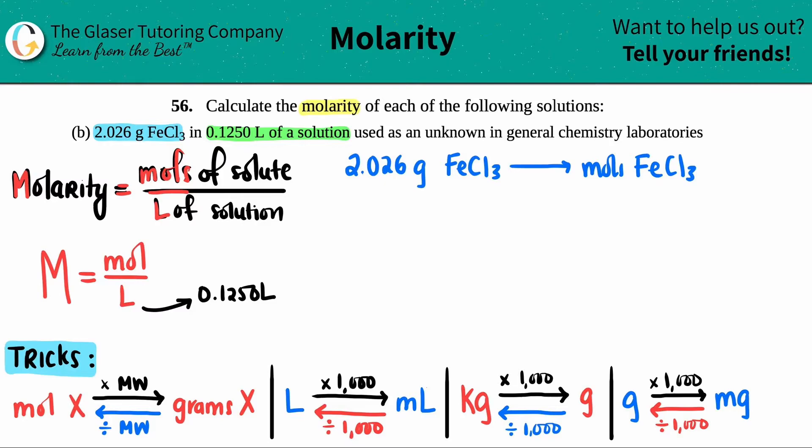If you start off with a gram of anything X (X means it's either an element or a compound) and you want to go to the mole of the same element or compound X, on both sides X just represents that if you start with one thing you got to end with the same thing. That's what we're doing here: grams of iron(III) chloride to moles of iron(III) chloride, so I can use this quick trick.